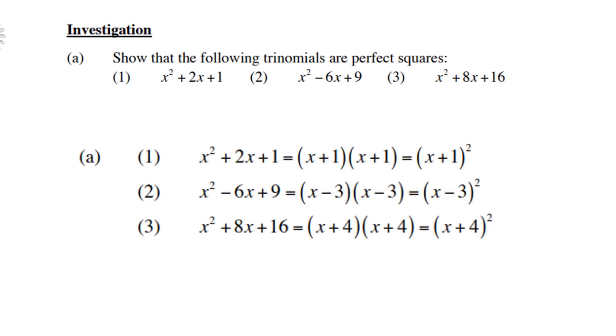Right, let's do some investigation. Show that the following trinomials are perfect squares. Let's start with the first one, x squared plus 2x plus 1. If you factorize, you will get two brackets which are exactly the same, namely x plus 1 times x plus 1, which is x plus 1 squared.